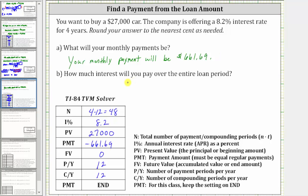For part B, how much interest will you pay over the entire loan period? To determine the amount of interest, we first determine the total amount of money paid over the four years, which is $661.69 times the number of months in four years, which is 48 (or four times 12), and then subtract the loan amount of $27,000.